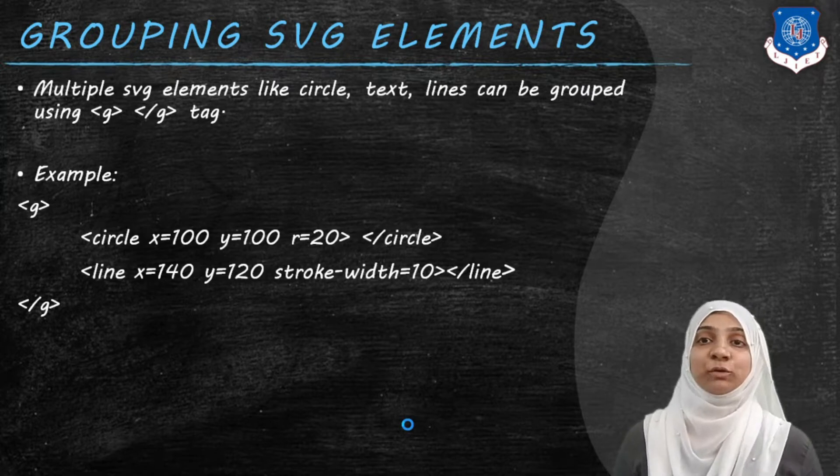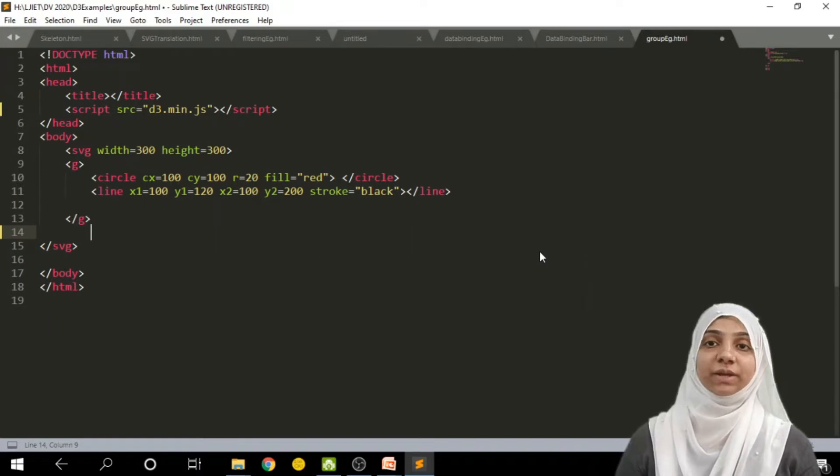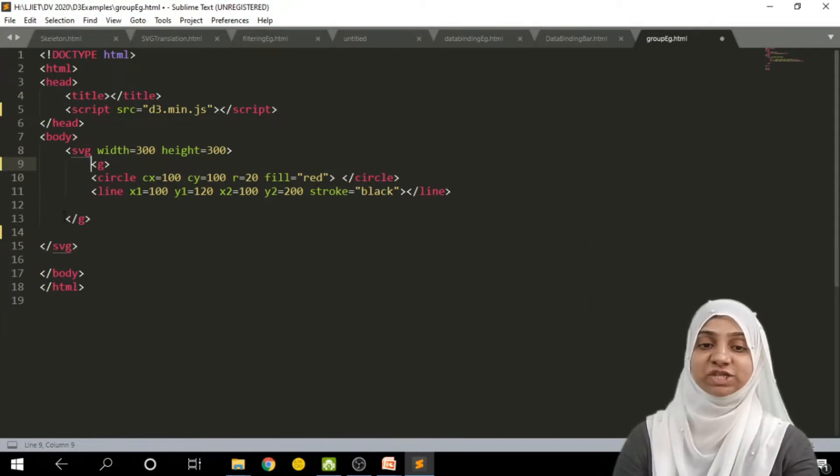So it will reposition all those shapes that are underlying it. Let us see an example of group tag. For example, in this particular file, within body,